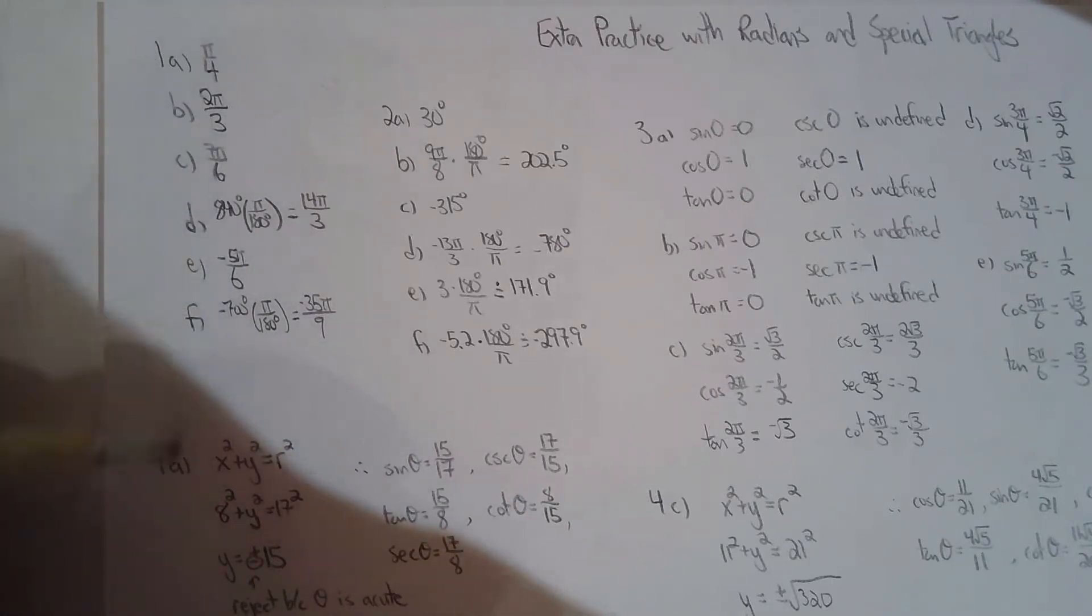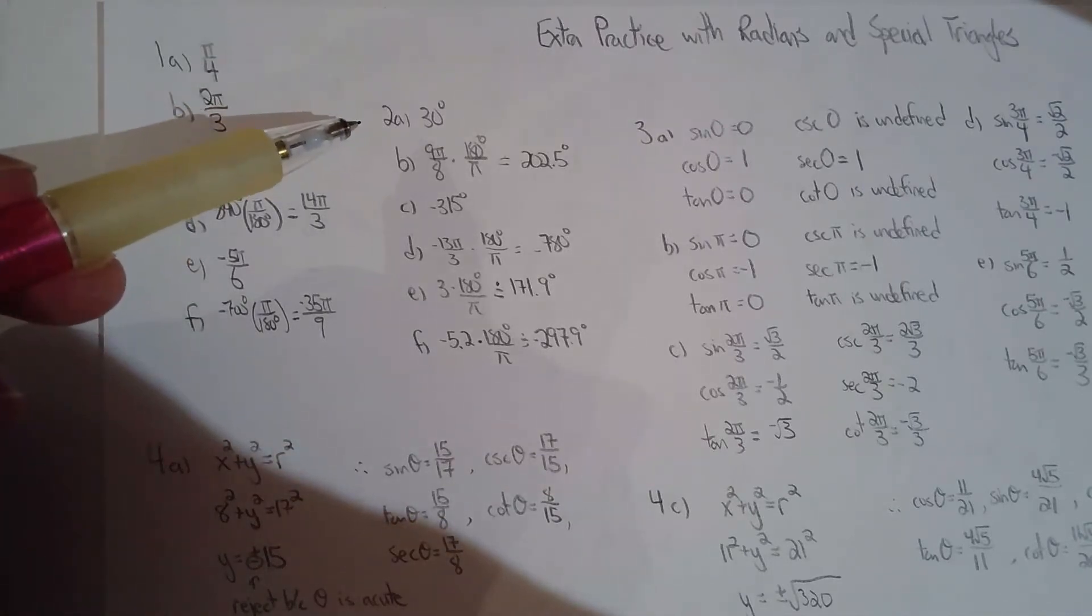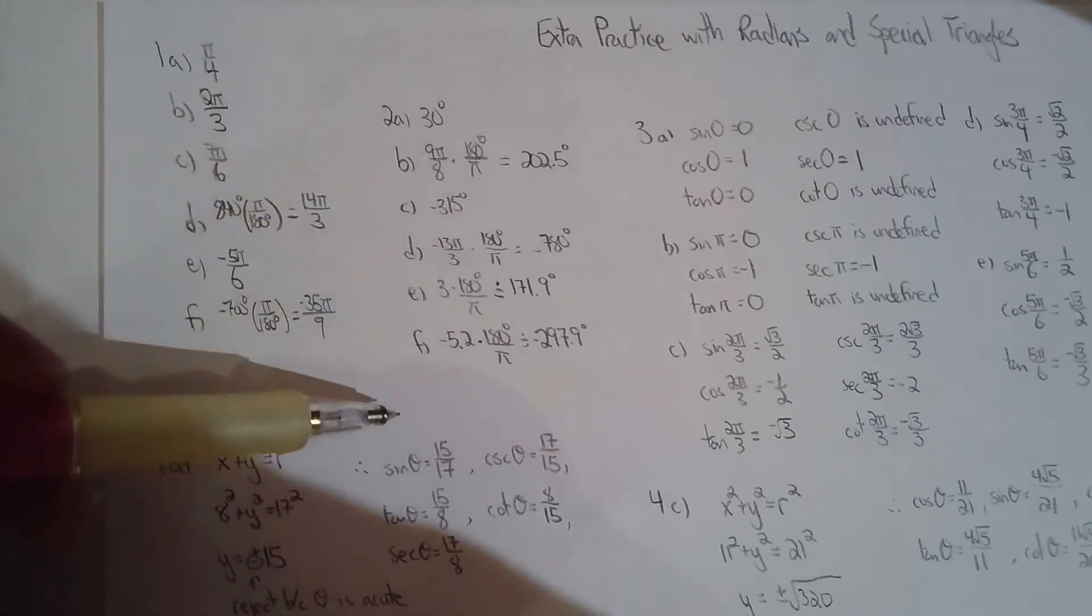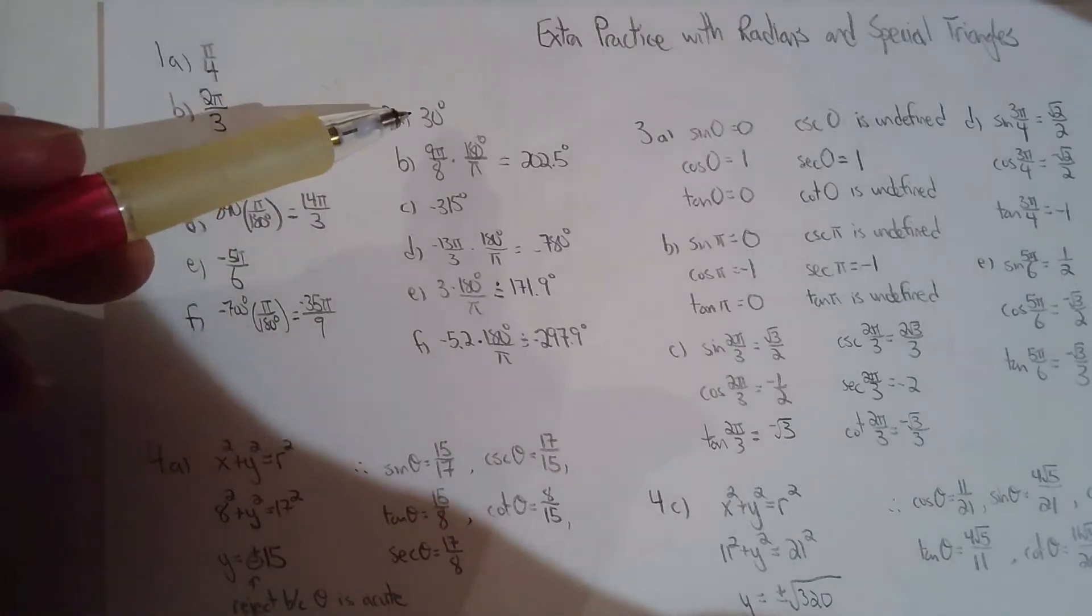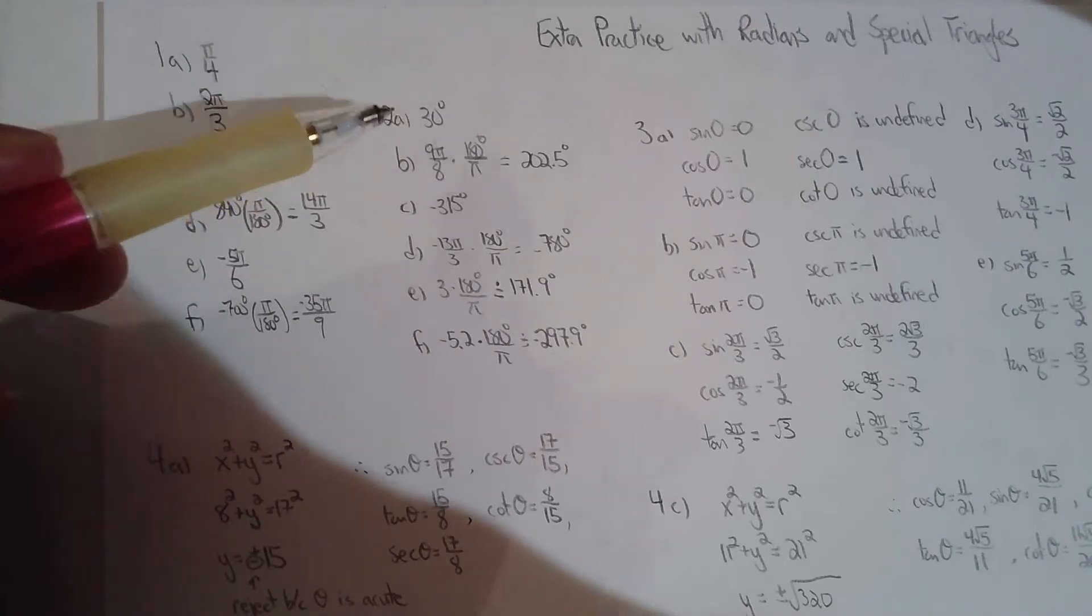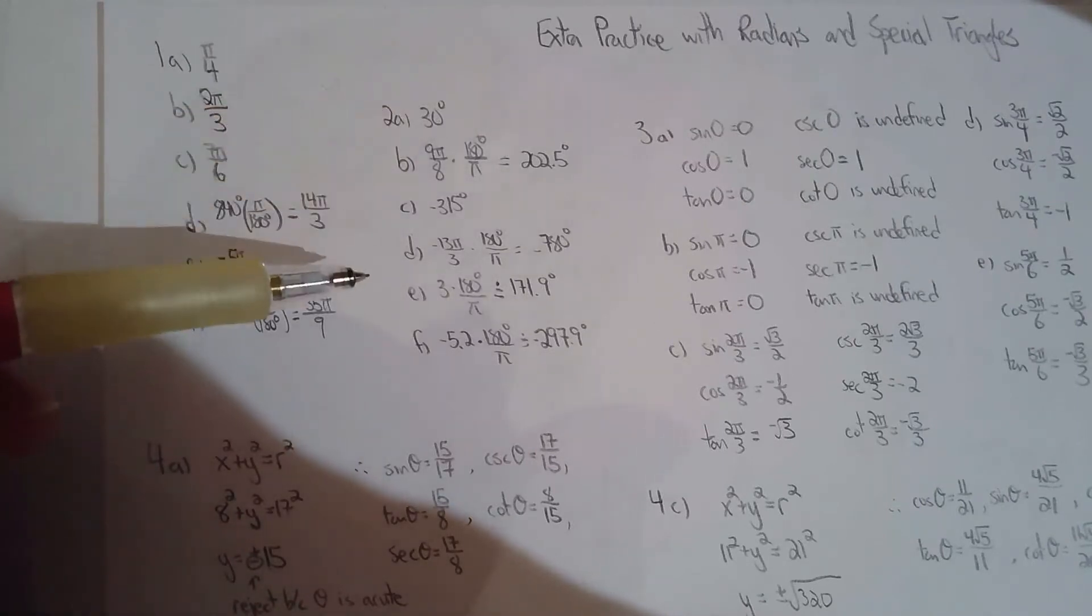For question two, that's asking us to go from radians to degrees, so multiply by the conversion factor and there you go. But for example 2a, we really shouldn't need to show our work for this one. π/6 radians, you need to memorize that as 30 degrees.